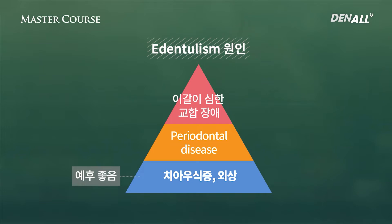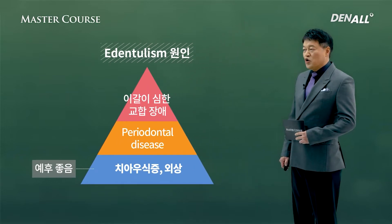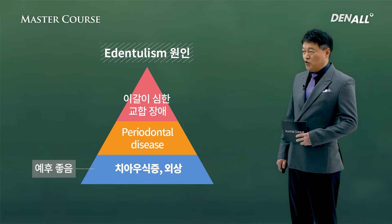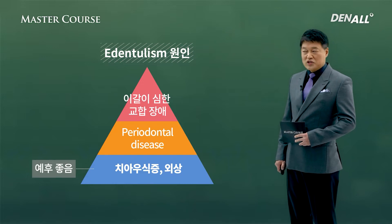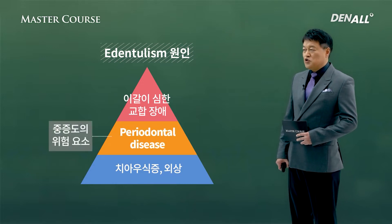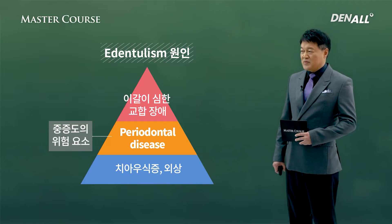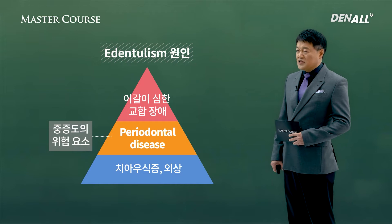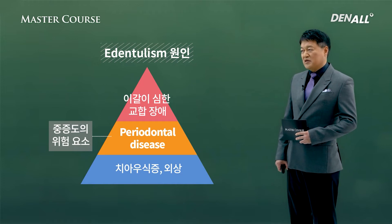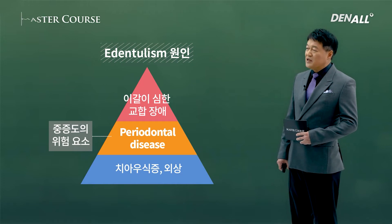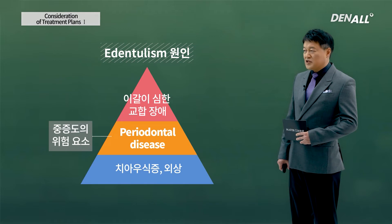We need to find out what caused tooth extraction. Carious or traumatic extraction have the best prognosis. Periodontal disease-related extractions have a moderate level of risk — due to disease, bone destruction might have occurred. In these cases, additional surgical GBR may be needed.